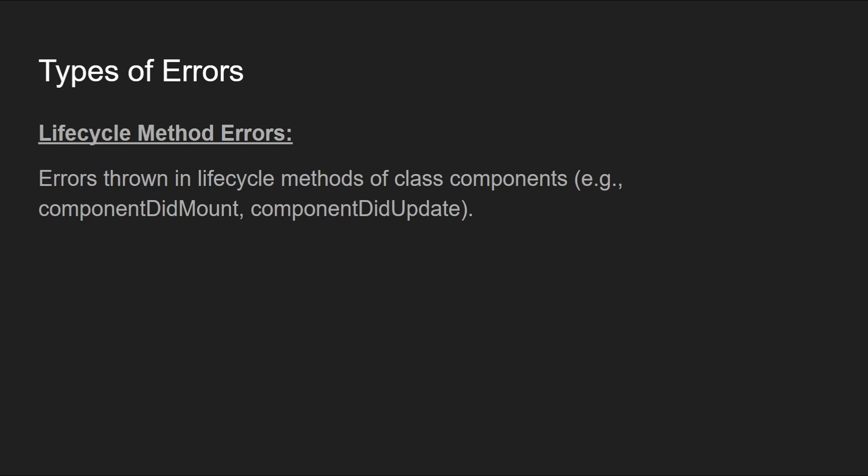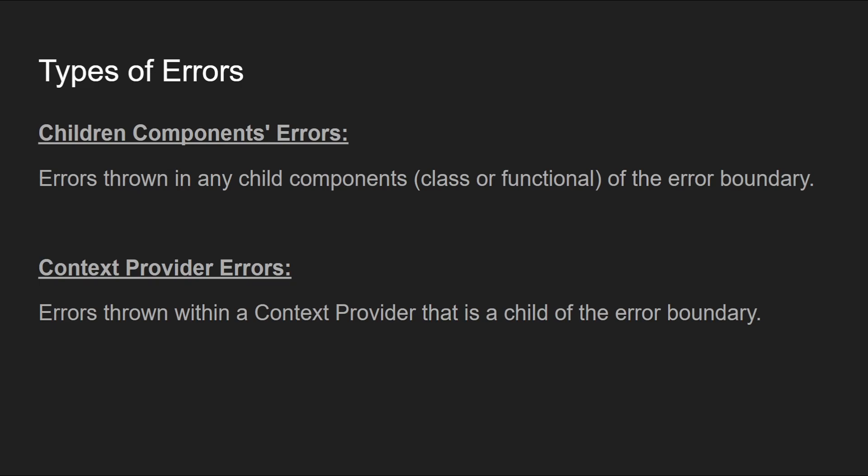Next are lifecycle method errors, which as the name suggests are thrown in class component lifecycle methods. There are different lifecycle methods like componentDidMount, componentDidUpdate, etc., and errors thrown in those are called lifecycle method errors. Next are children component errors, which can be thrown in child components — either class or functional — and are called child component errors.